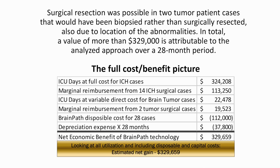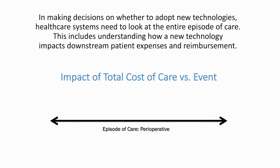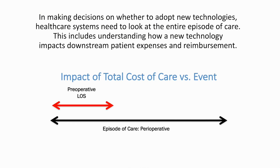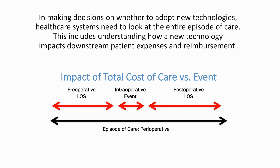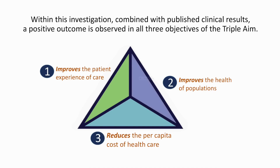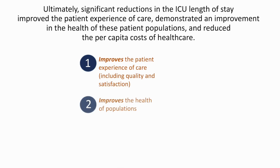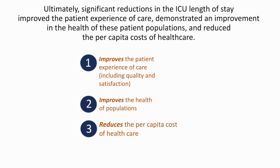In making decisions of whether to adopt new technologies, healthcare systems need to look at the entire episode of care. This includes understanding how a new technology impacts downstream patient expenses and reimbursement. Within this investigation, combined with published clinical results, a positive outcome is observed in all three objectives of the Triple Aim. Ultimately, significant reductions in ICU length of stay improve the patient experience of care, demonstrate an improvement in the health of these patient populations, and reduce the per capita cost of healthcare.